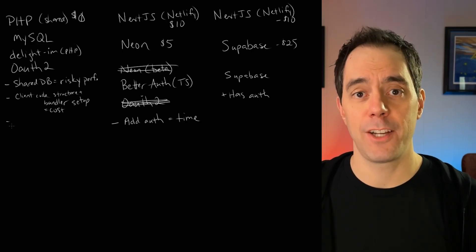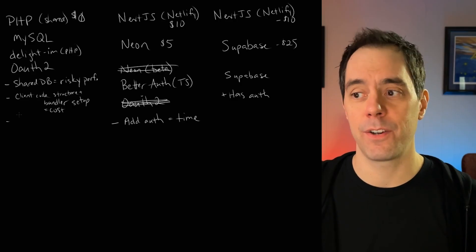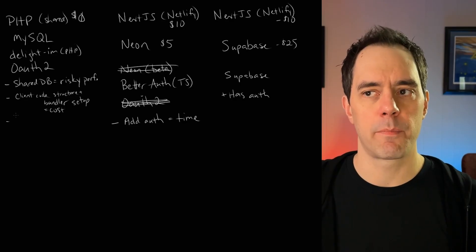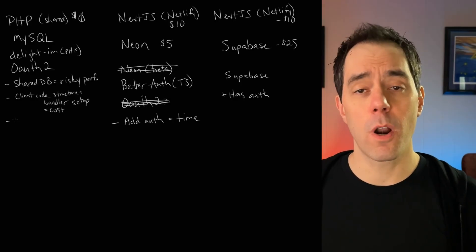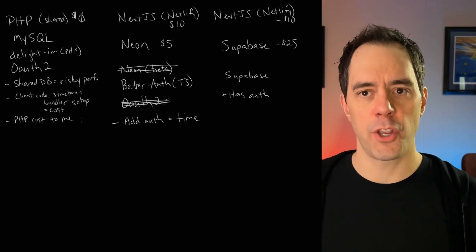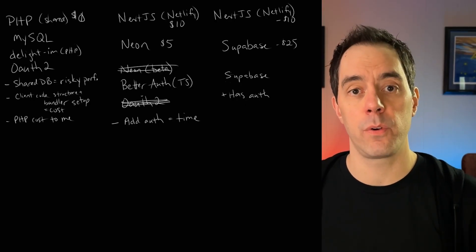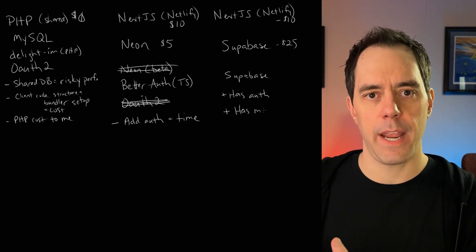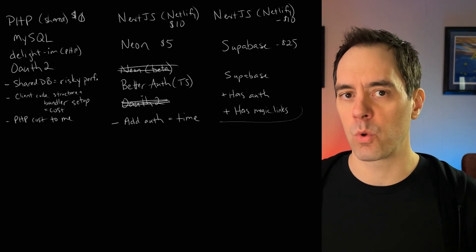I haven't used PHP a lot in at least five to eight years, so there'll be a period where I'm just getting back up to speed, which is another cost to factor in. There's one other feature I forgot to mention: I'd like authentication to support magic links, meaning a user just needs to sign up, get an email, and authenticate through clicking a link in their email, as opposed to worrying about passwords. I know Supabase supports it, BetterAuth will support it with a plugin, and I'm not sure if Delight.im supports it — so that might be another factor to rule out PHP.